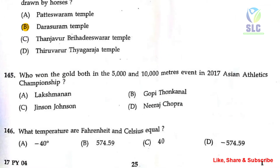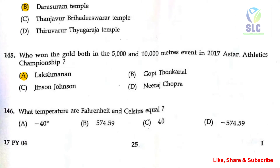The next question: who won the gold in both the 5000 and 10000 meters event in the 2017 Asian Athletics Championship? The correct answer is option A — Lakshmanan. The next question: at what temperature are Fahrenheit and Celsius equal? The answer is option A — minus forty degrees.